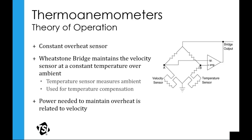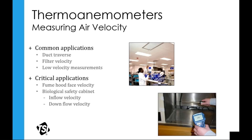The temperature sensor also provides temperature compensation, so if there are slight fluctuations in airstream temperature, the velocity output is adjusted accordingly. Low velocity measurements are probably the main measurement applications of thermal anemometry. Duct traverses can involve higher velocities, but filter velocity can be a couple hundred feet per minute, fume hoods about 100 feet per minute, and bio cabinets a little less. For repeatable, accurate, low-velocity measurements, thermoanemometers are the way to go.